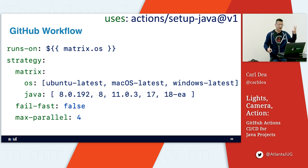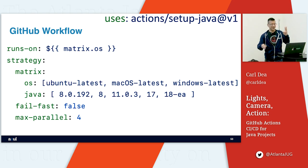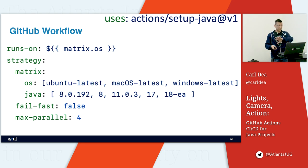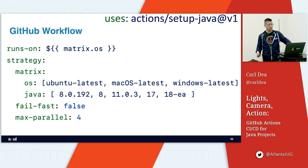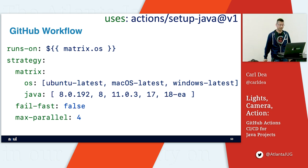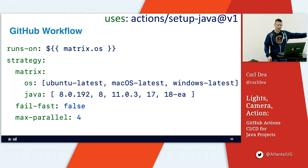We created a matrix lookup with Java versions and OS. This job is going to run on three different runners. Now we have five different Java versions — Java 8, 11, 17, and others. So this job will run five times three — that many times. Fail fast is false, max parallel is four, so it'll pick up speed doing four jobs simultaneously.